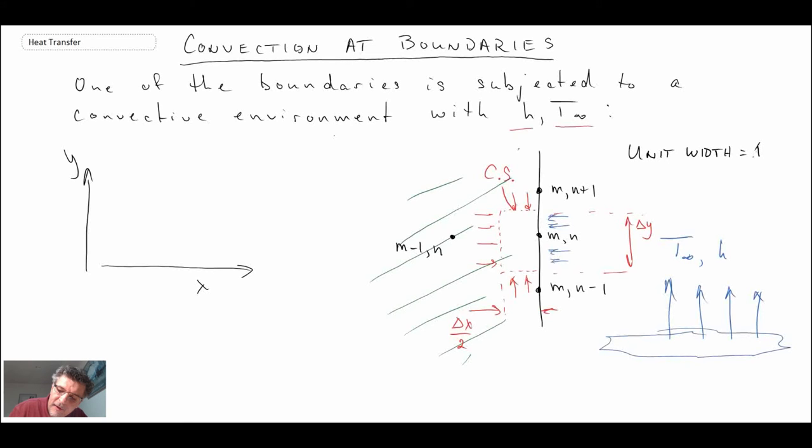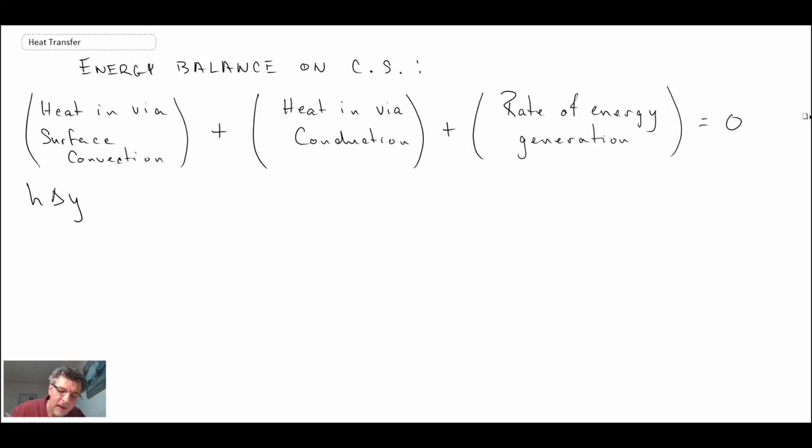So the width is equal to one. And with that, the area, remember, we have Newton's law of cooling, h A delta T. So that would be h delta y times one. I'm not going to write the one. And given that the energy is flowing from the fluid into the wall, we'll assume that the fluid is hotter.